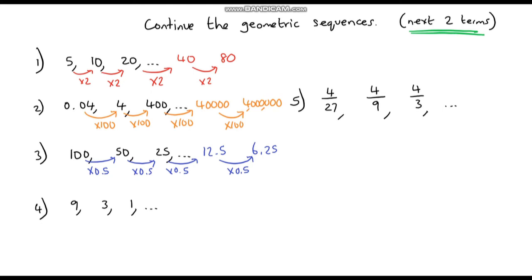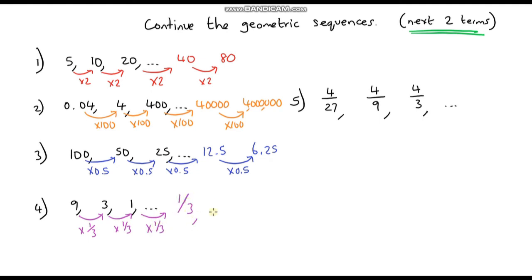Number 4: to go from 9 to 3 I'm multiplying by a third. From 3 to 1 I'm multiplying by a third. So a third of 1 is just one third, and then multiplying by one third again: a third times a third gives me one ninth.